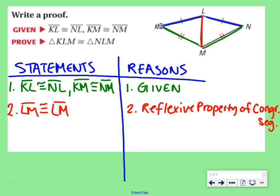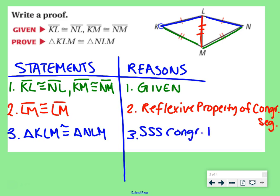we need to say that LM is congruent to LM. And our reasoning is the reflexive property of congruent segments. You can say that a segment is congruent to itself. So, we put three tick marks there. Now, we know that all three sides of our triangle are congruent. So, reason number three, we can say that triangle KLM is congruent to triangle NLM. Reason being, side, side, side congruence postulate.